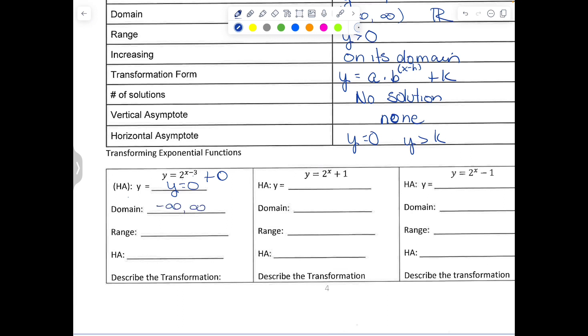Because this exponential domain is going to be negative infinity to infinity, the range is y is greater than 0. And we've already talked about the horizontal asymptote. So to describe the transformation, because it's x minus 3 in parenthesis, we know parenthesis does the opposite of what we think. So that's going to be right 3 and up and down 0, because k is 0.